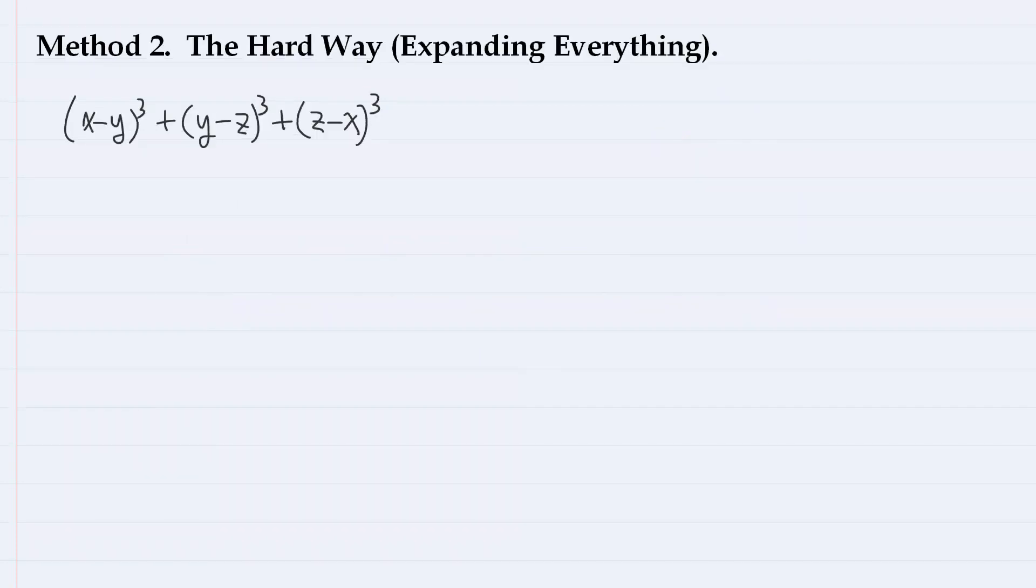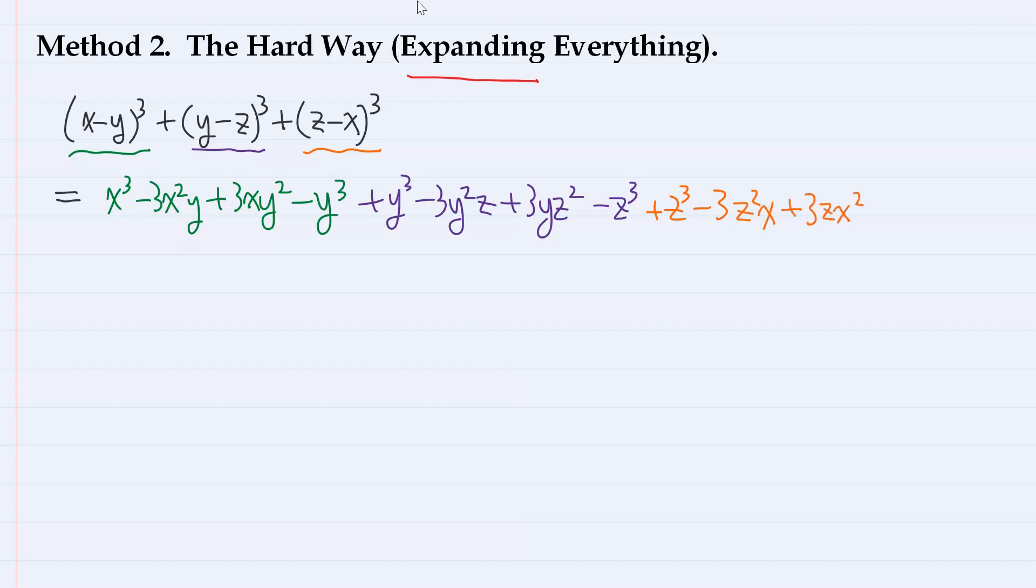Next, the hard way. Here, let us expand everything and try to obtain the same result. So, first, if we expand this, we have x³ - 3x²y + 3xy² - y³. And if we expand this, we have +y³ - 3y²z + 3yz² - z³. And from here, we have z³ - 3z²x + 3zx² - x³. Now, notice that x³ terms cancel out, y³ terms cancel out, and z³ terms cancel out.